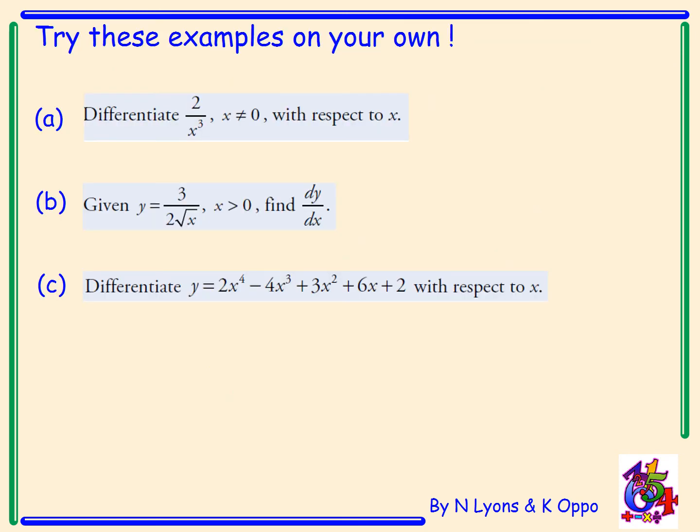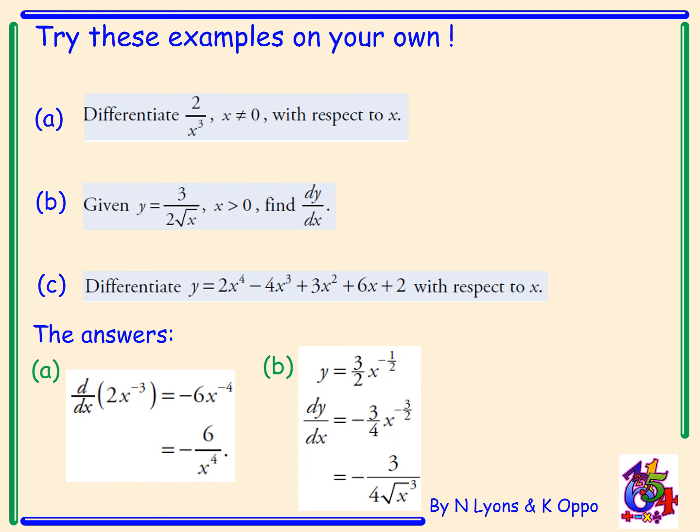Now try these examples on your own. Please pause the video. The answers: (a) dy/dx is equal to negative 6 over x to the power of 4. For (b), dy/dx equals negative 3 over 4 root x cubed. And (c), dy/dx equals 8x cubed minus 12x squared plus 6x plus 6.